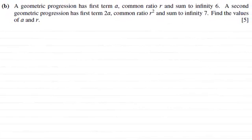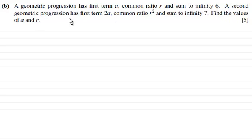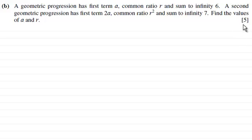For this question, we're given that a geometric progression has first term a, common ratio r, and sum to infinity 6. A second geometric progression has first term 2a, common ratio r squared, and sum to infinity 7. We've got to find the values of a and r, for 5 marks.